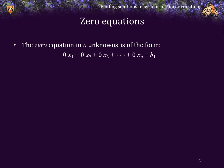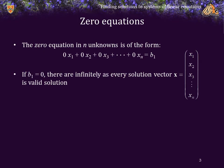To begin, the zero linear equation in n unknowns is of the form zero times each variable summed is equal to the target value b sub 1. Now, if b sub 1 is equal to 0, then there are infinitely many solutions, as every solution vector x is a valid solution. Basically, all n variables are free — you are free to choose any values you want.